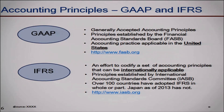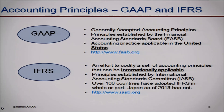So those are the four key types of information that are used. Now there are several guiding principles to govern these numbers. One is called GAAP, and the other is called IFRS. GAAP is an abbreviation for Generally Accepted Accounting Principles, and it is a principle established by the Financial Accounting Standard Board, called FASB. This accounting practice is applicable in the United States, so when you say GAAP, think about what is applicable in the United States.